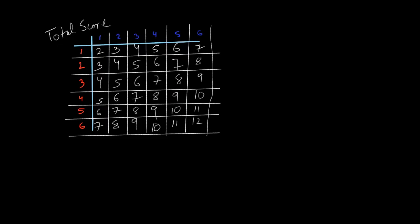Now you'll be asked to use this table to find probabilities. For example, find the probability that the total is 3. Previously we did this using permutations, but here we just count from the table. The total number of outcomes n is 36 (all values in the table). The total of 3 appears only 2 times, so the probability is 2/36 = 1/18, just like before.